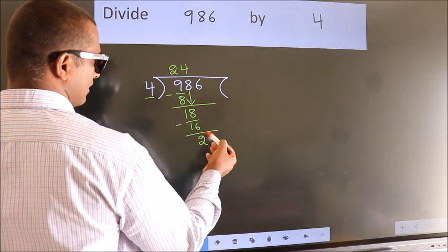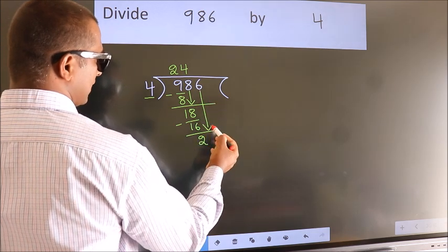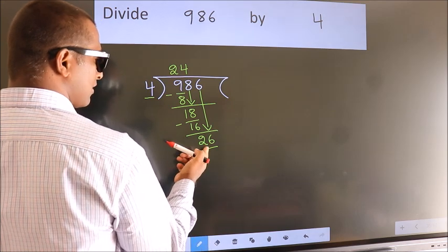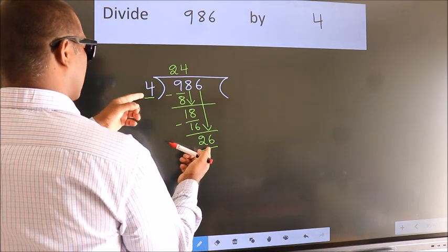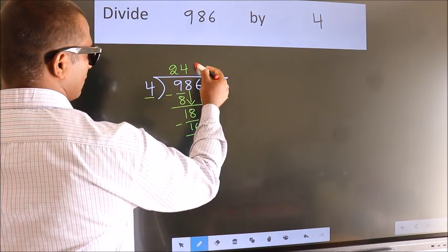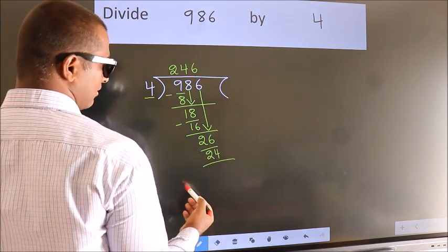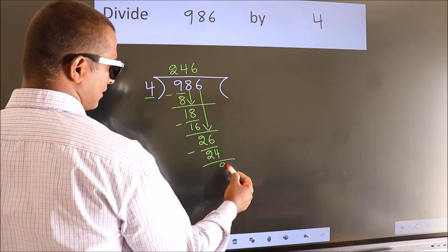After this, bring down the next number. So 6 down, so 26. A number close to 26 in the 4 table is 4 times 6 is 24. Now we subtract. We get 2.